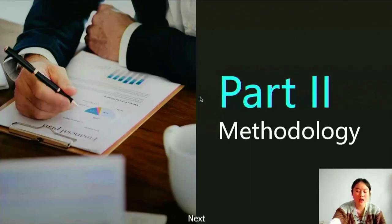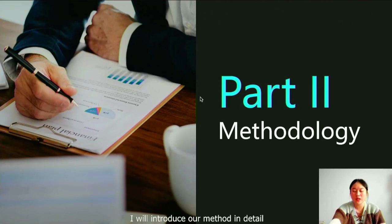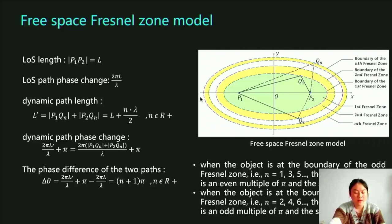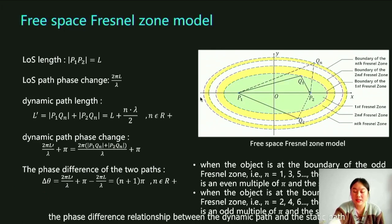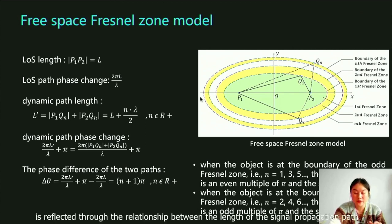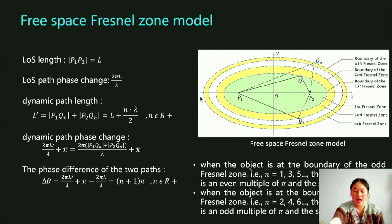Next, I will introduce our method in detail. In the Fresnel zone law in free space, the phase difference relationship between the dynamic path and the static path is reflected through the relationship between the length of the signal propagation path. Everyone is familiar with it, so I won't introduce it in detail.